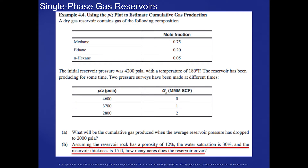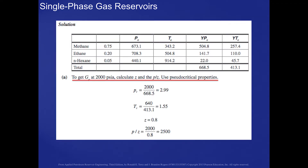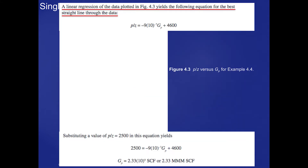Part B assumes the reservoir rock has a porosity of 12 percent, water saturation of 30 percent, and a reservoir thickness of 15 feet — how many acres does the reservoir cover? To get G sub P at 2,000 PSIA, we calculate Z and P over Z using the gas composition to calculate pseudo-critical pressure and temperature, then use equations from Chapter 2 and figure 2.2 to calculate the Z factor. We get a Z value of 0.8 and a P over Z of 2,500, giving a G sub P of 2.33 billion SCF.